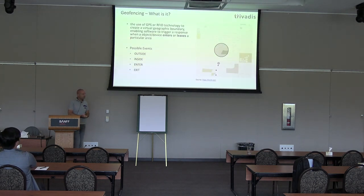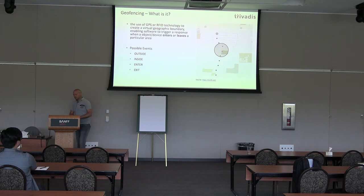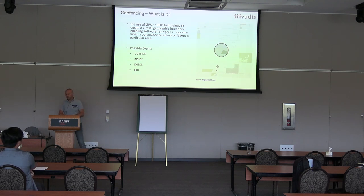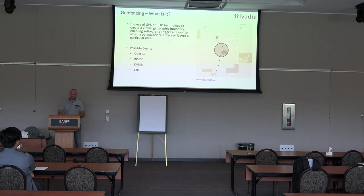So geofencing — what is it? The idea is that you have positional data from vehicles, trucks. In my sample, they are artificial trucks. I just have a simulator where trucks drive around, and we can see that a truck enters a geofence. The idea is that you have geofences — in this case, a circle, a certain geographic area — where you might want to know that the truck is entering or exiting that geofence. Possible events are: outside, inside, entering, and exiting a geofence.